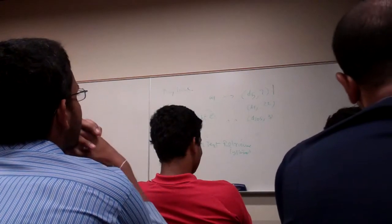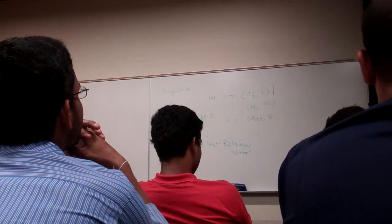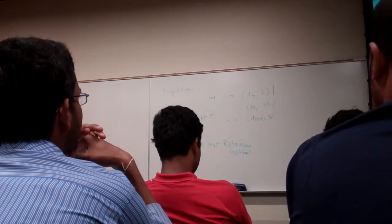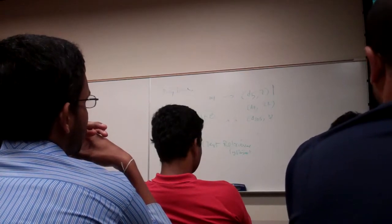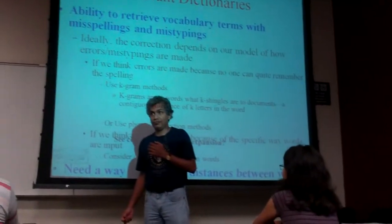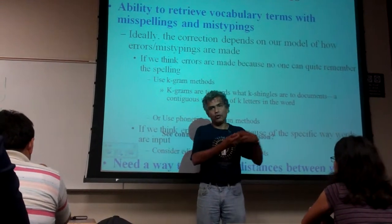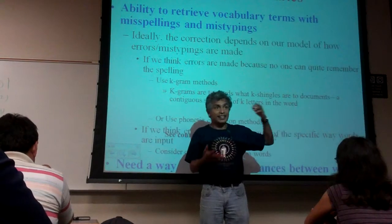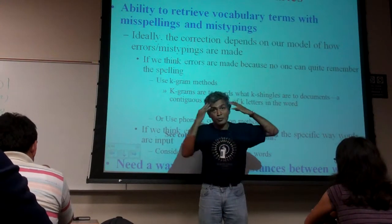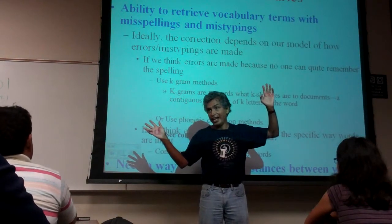Among words at the same k-gram distance from the query word, you can see which errors are more likely. You can have a model of the errors, and use that to figure out which is the real word the user probably meant. Then of course there are also phonetic corrections — certain people will basically assume that English is phonetic, which it is anything but.